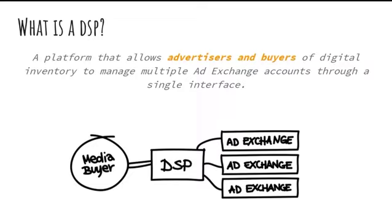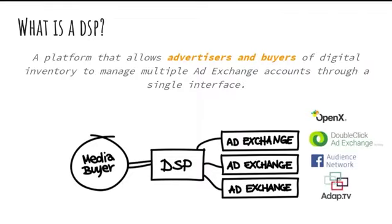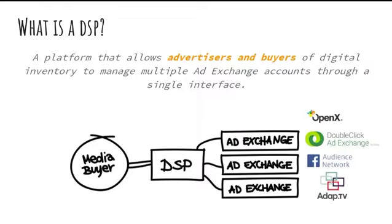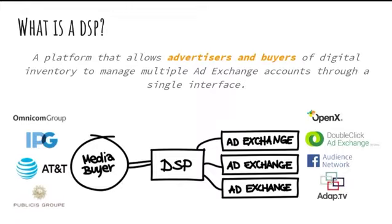When publishers make their impressions available on various ad exchanges for advertisers like agencies or direct brands to buy, a DSP on behalf of the advertiser will automatically decide which impressions are most relevant and then place bids on them.